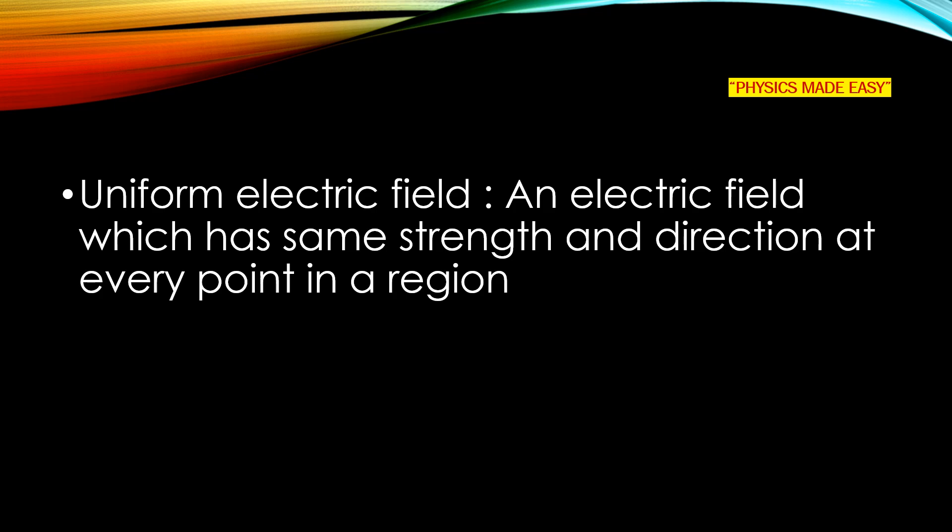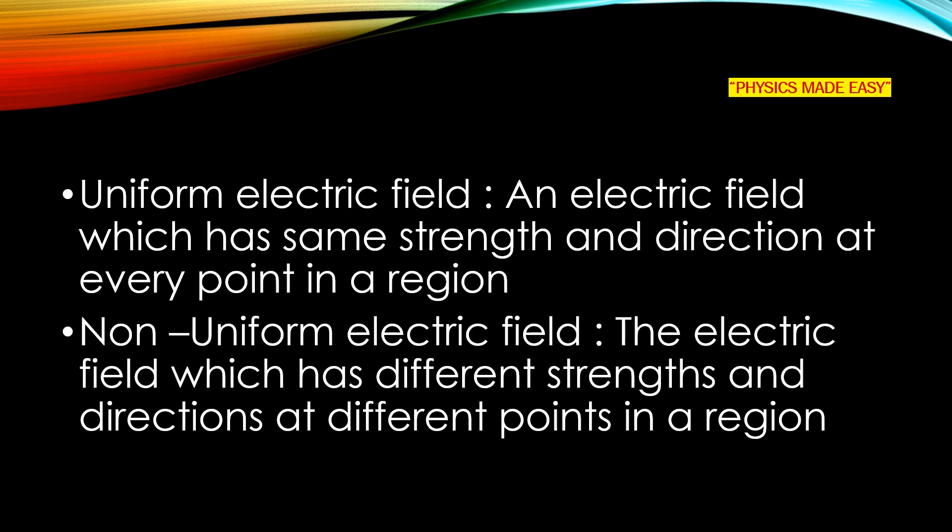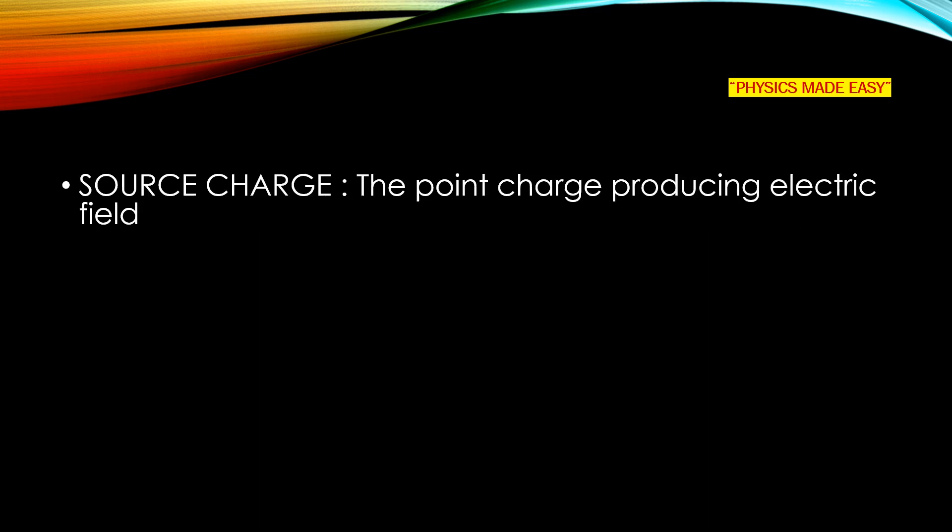The first one is a uniform electric field — an electric field which has the same strength and direction at every point in the region. Whereas there is another one, non-uniform electric field, which has different strength and directions at different points in a region. When we talk about the electric field and its different types, we have to consider the charges.